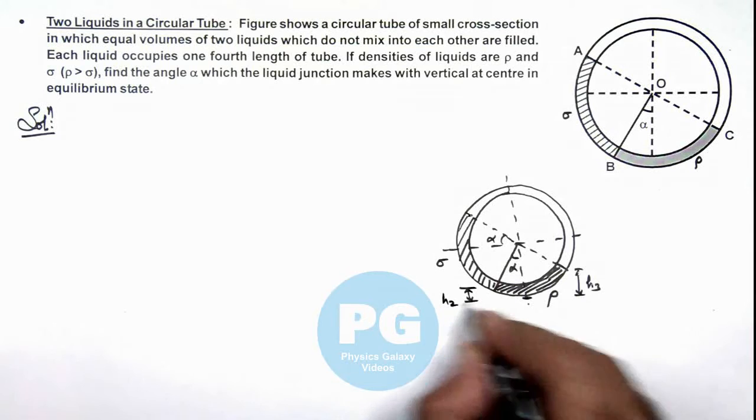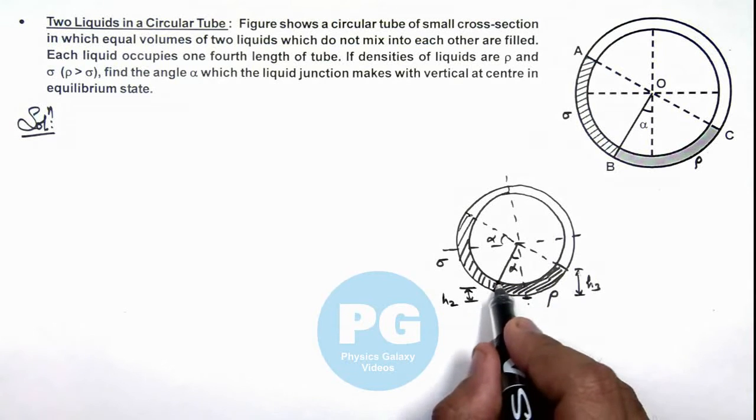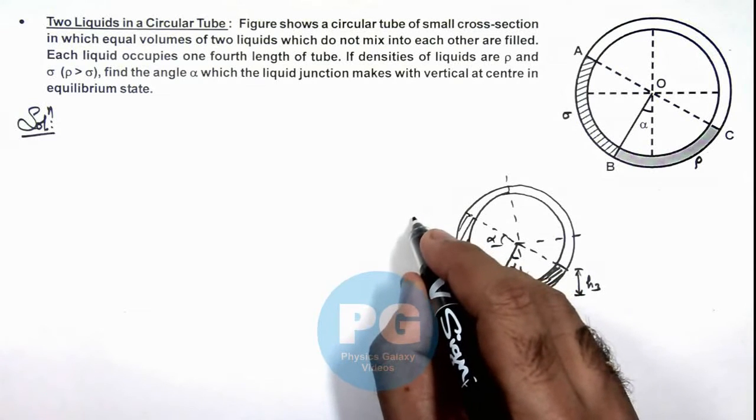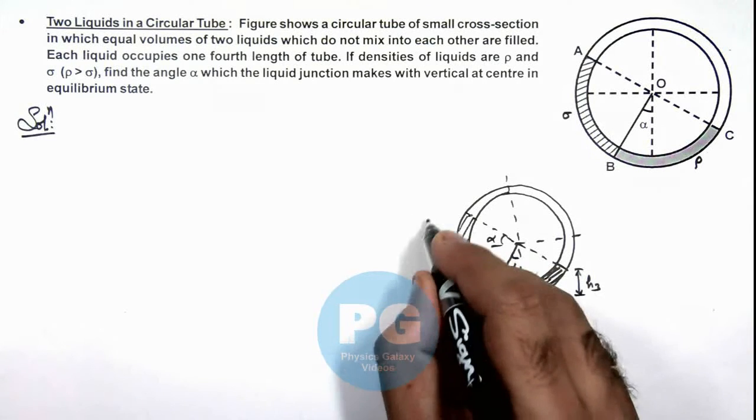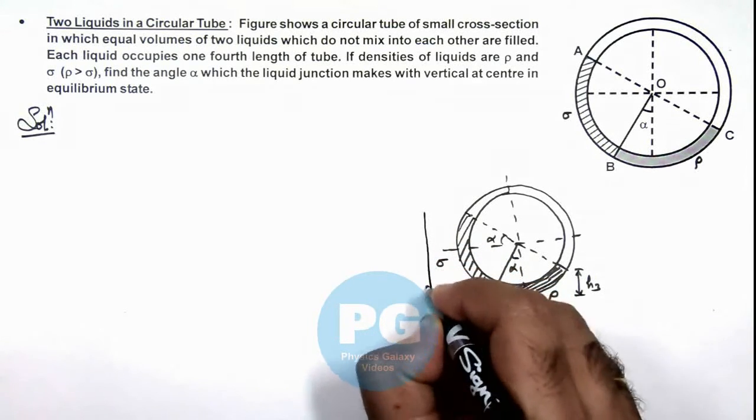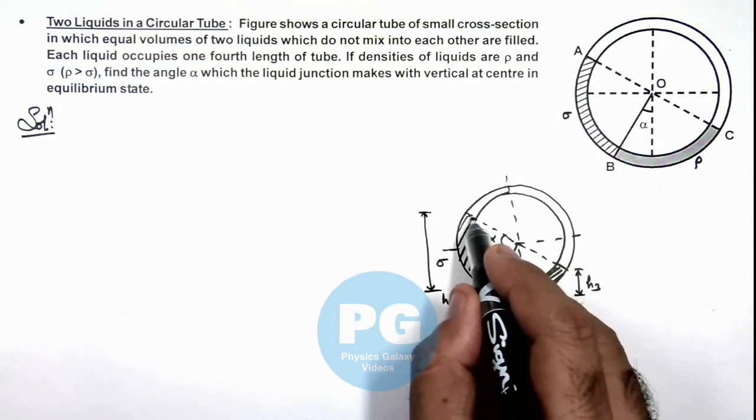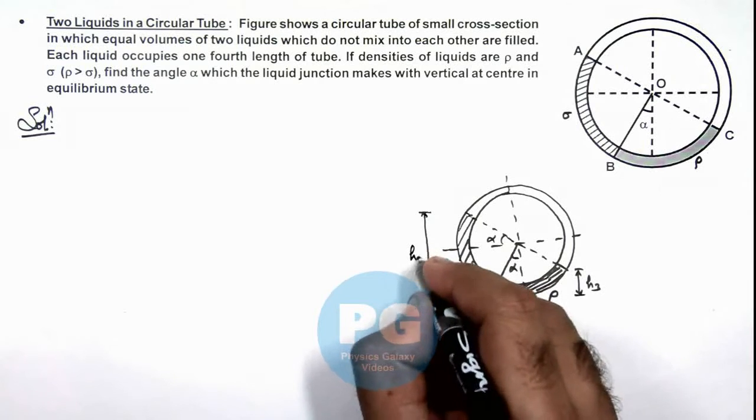And say this height above the level h₂, or from the junction to the top level of another liquid, is say h₁. Then we can write...